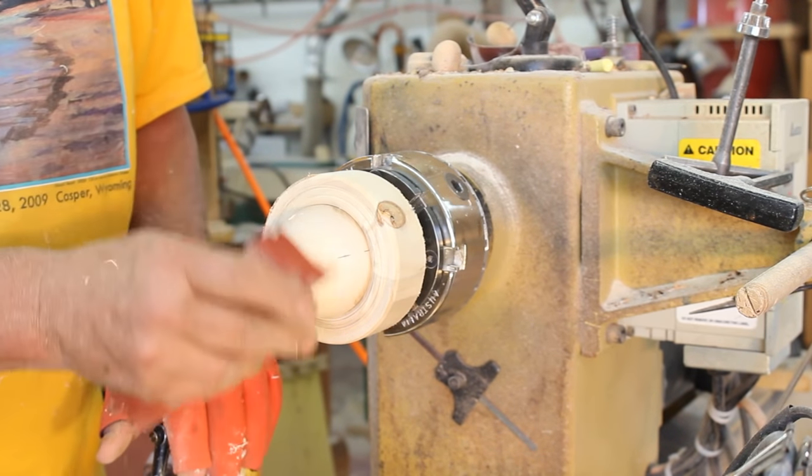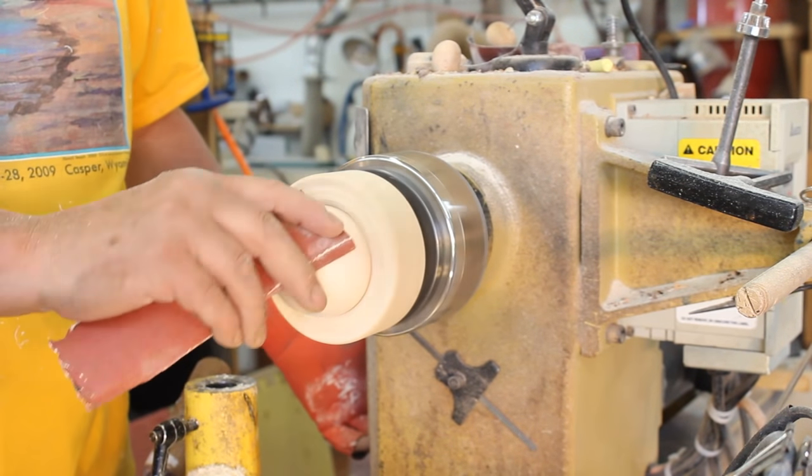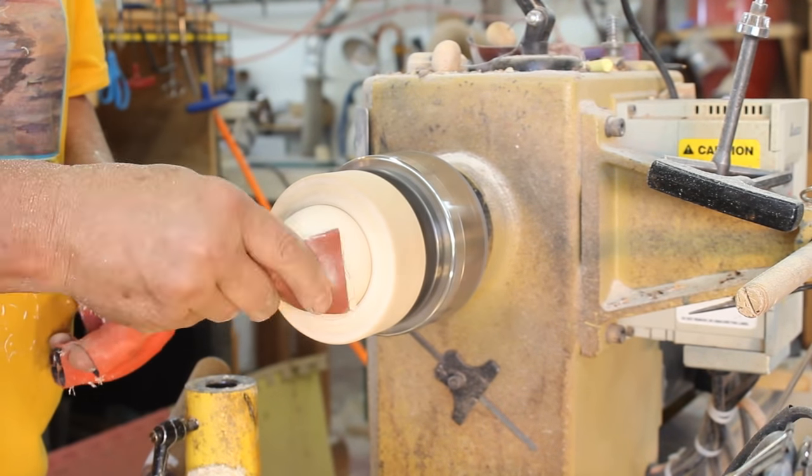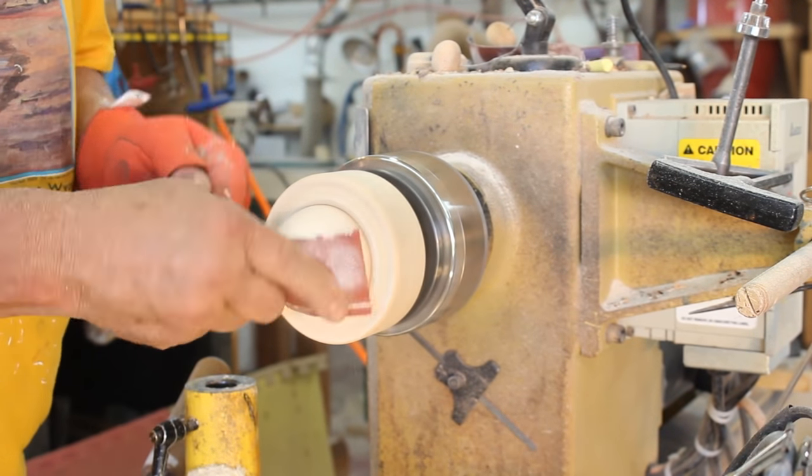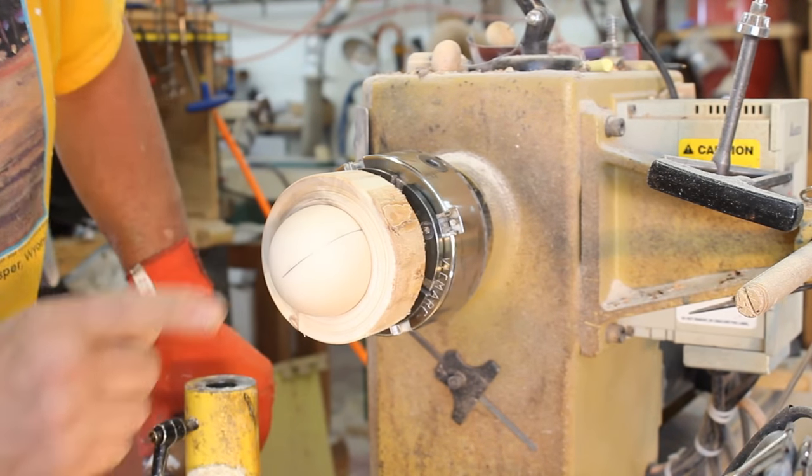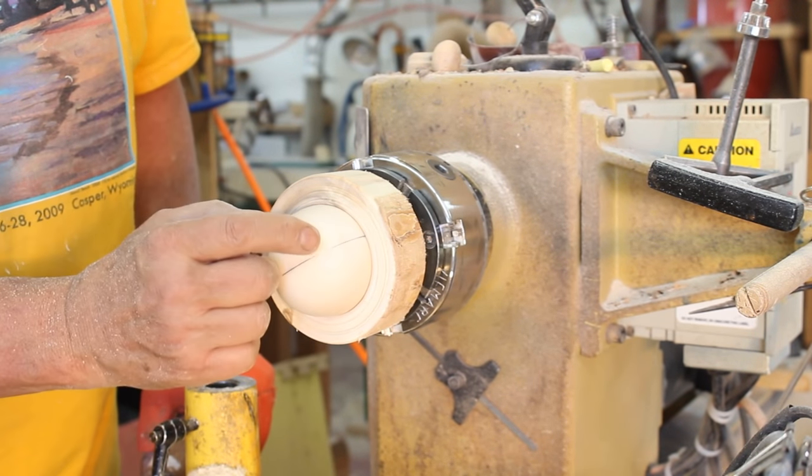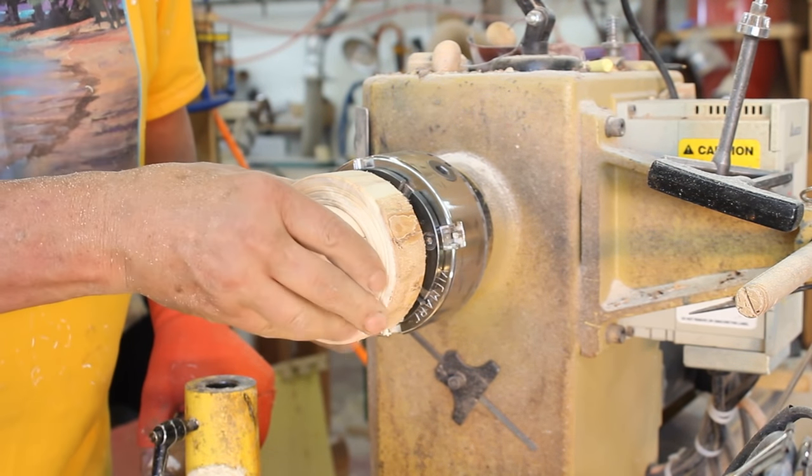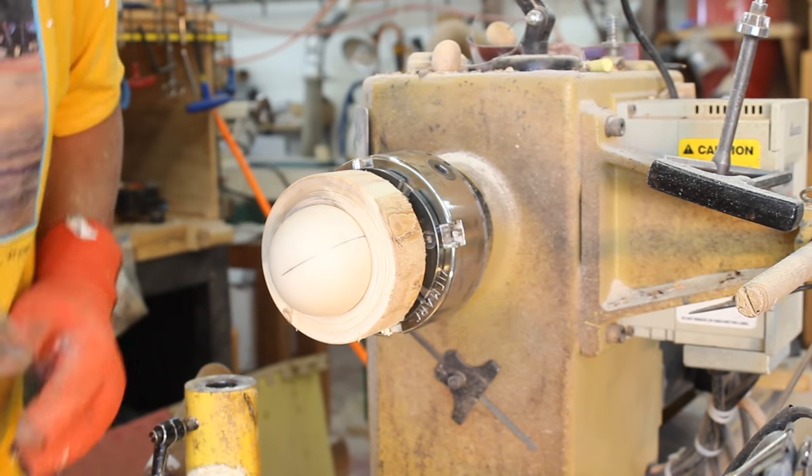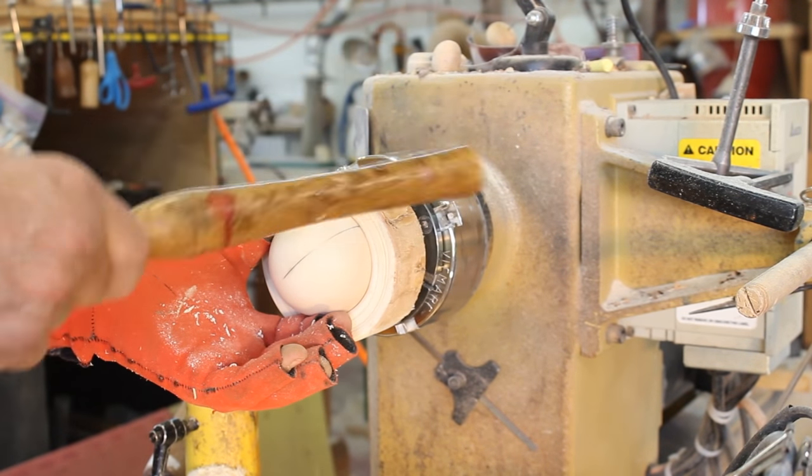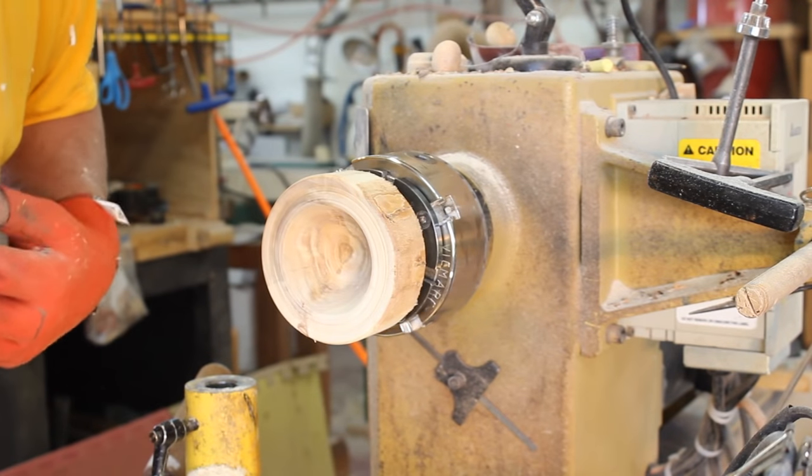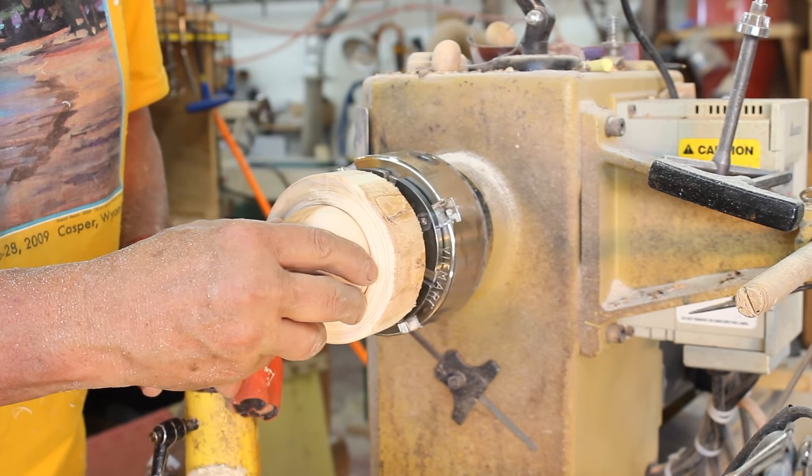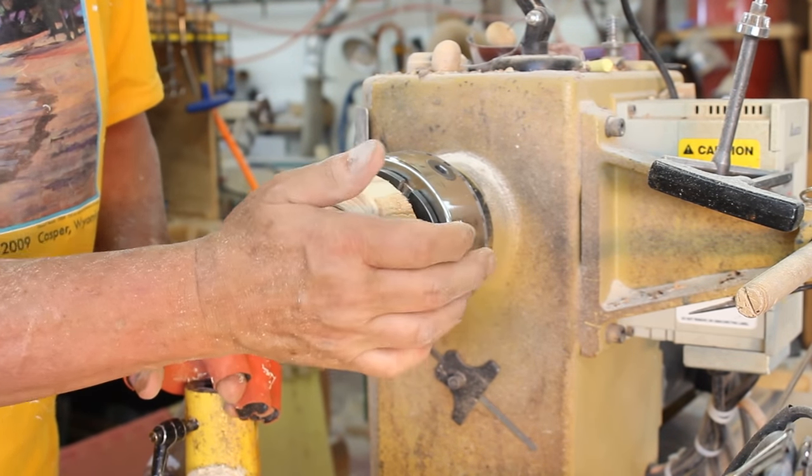Now I've got some 120 grit sandpaper. Now before I go to any finer grit, I'm going to take that out and sand the entire thing with this sandpaper. There we go. That feels pretty good. I've got a little ridge in the center there. So 90 degrees. And all I'm going to do is do some sanding.